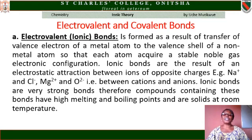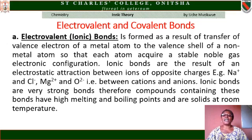Before we go into the lesson, I would like us to define some terms. The first one is electrovalent and covalent bonds. Electrovalent bonds, also known as ionic bonds, is a type of bond formed as a result of transfer of valency electrons of a metal atom to the valency shell of a non-metal atom, so that each atom acquires a stable noble gas electronic configuration.